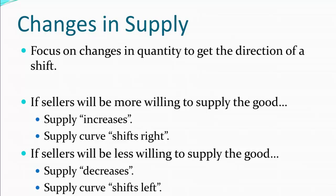On the other hand, if sellers become less willing to supply the good, even at exactly the same price as before, then we'd say supply decreases, or the supply curve shifts to the left. An important point here is to remember that the price of the good itself will not change the supply of the good. The supply, after all, is a relationship between prices for the good and the quantity that is offered for sale.